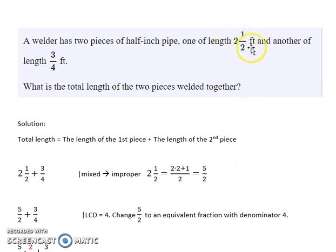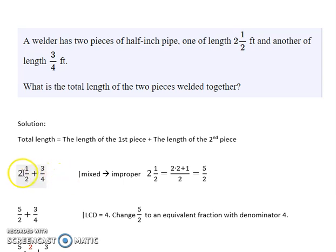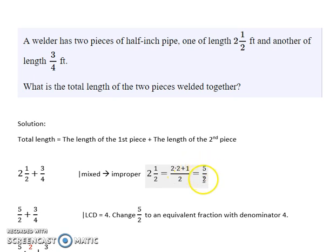The length of the first piece is two and a half feet and the length of the second piece is three-fourths feet, so we're adding two and a half to three-fourths. We're adding a mixed number and a fraction, so the first thing we want to do is convert the mixed number to an improper fraction. We do that by multiplying the denominator by the whole number part and adding the numerator: two times two plus one equals four plus one equals five, all over the original denominator of two. So this mixed number is equivalent to the improper fraction five over two.